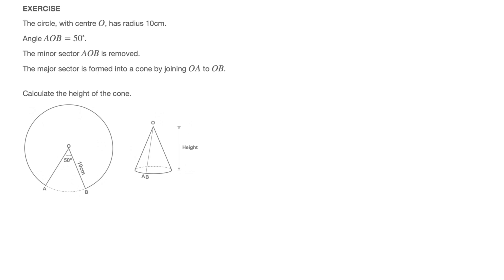This exercise reads as follows. The circle with center O has radius 10 cm. Angle AOB is equal to 50 degrees — that's the angle I'm hovering over right now. We're told that the minor sector AOB is removed, and the major sector is formed into a cone by joining OA to OB. So we start with a circle whose center is O, cut out the minor sector AOB, which leaves us with the major sector I'm hovering over.